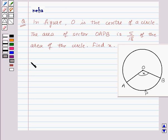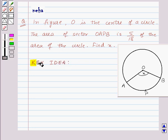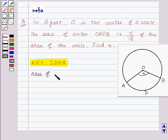Before moving on to the solution, let's see the key idea we will use for this question. The area of a circle is given by πR², where R is the radius of the circle, and the area of a sector of angle θ is equal to (θ/360) × πR².